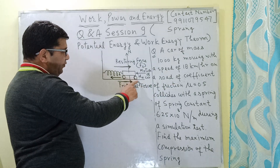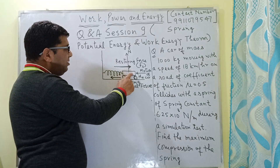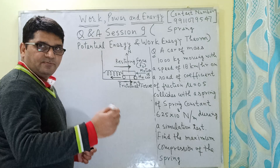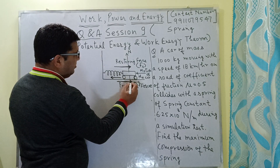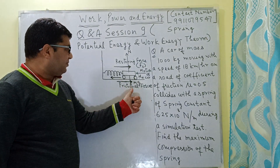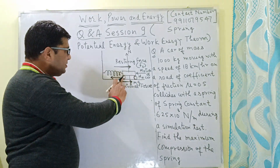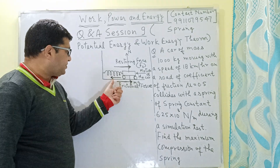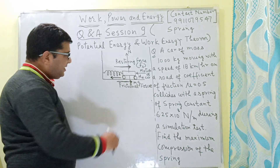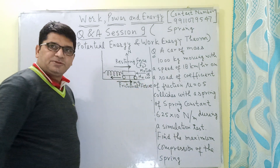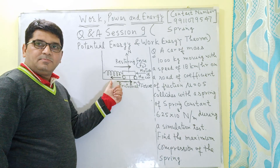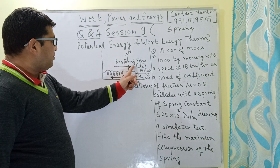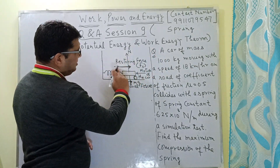At the same time, since the coefficient of friction is 0.5, a frictional force will be acting on this car. Since frictional force opposes relative motion, the direction of this frictional force is given by this arrow — it is in the opposite direction of the compression of the spring. The spring is getting compressed in this direction, and the frictional force acts opposite to that direction of compression.